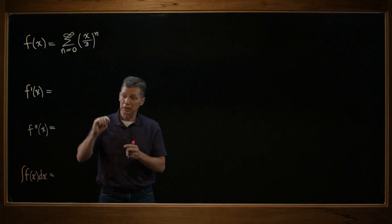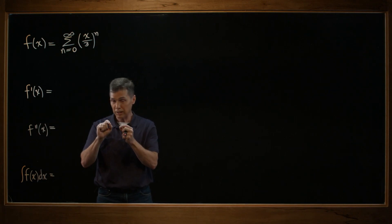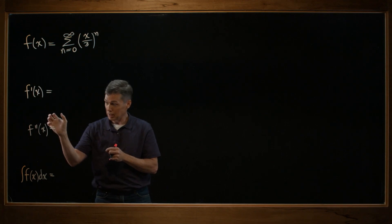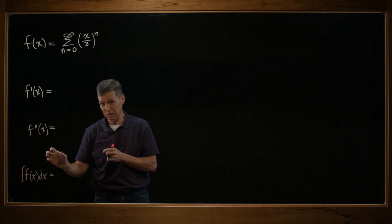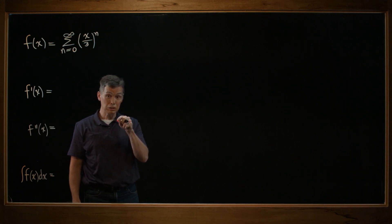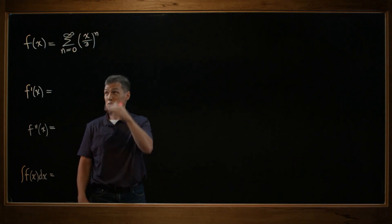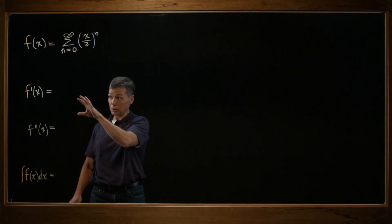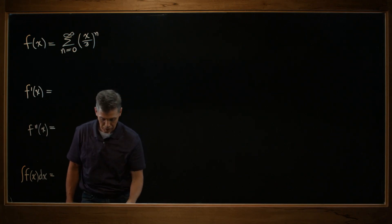Now what I'm going to do is start by first finding, they give us f of x. I've got to find f prime of x. I have to find f double prime of x. And then I also have to find the integral. What they want us to do then is find the interval of convergence for each of these, for all four of these. So to start, I'm going to go ahead and find the derivative, second derivative, and the integral.